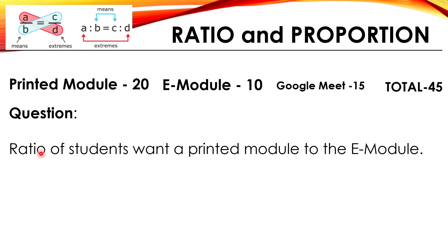Last question: ratio of students want a printed module to the e-module. Printed module is 20 is to 10. So lowest term, 2 is to 1.